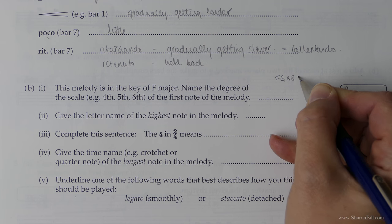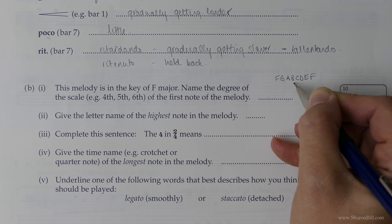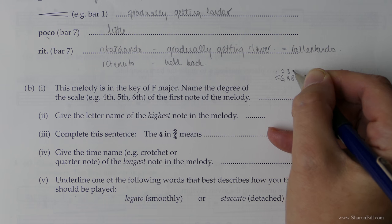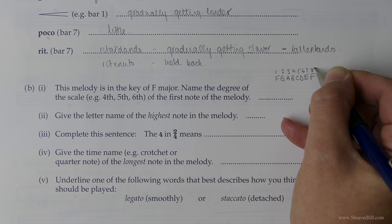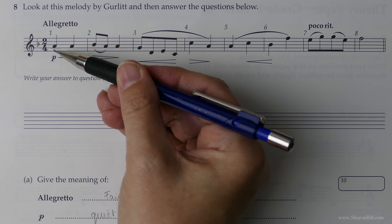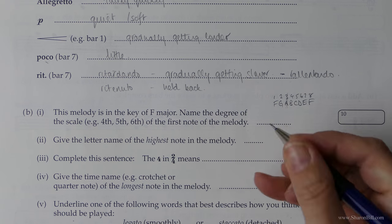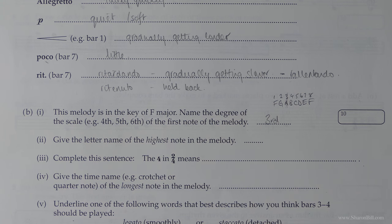F, G, A, B, C, D, E, F — of course it's B flat but your key signature will do all of that. F is the first, two, three, four, five, six, seven, eight. And here we can see that we've got note A, and we can see that A is our third. So we can double check it that way.